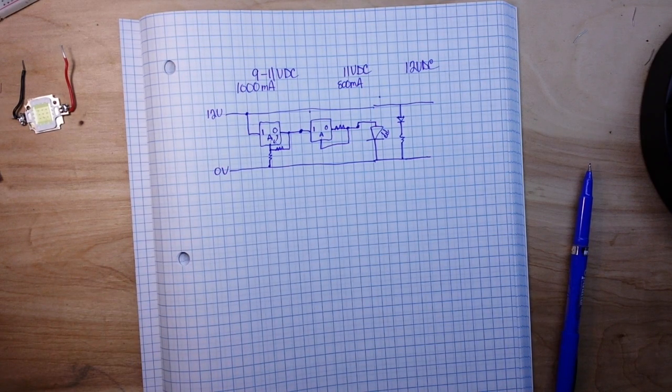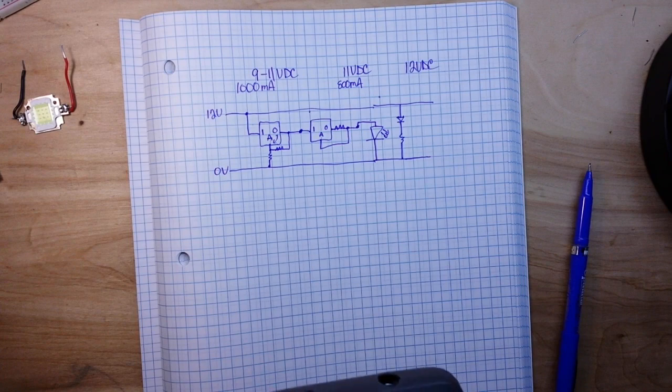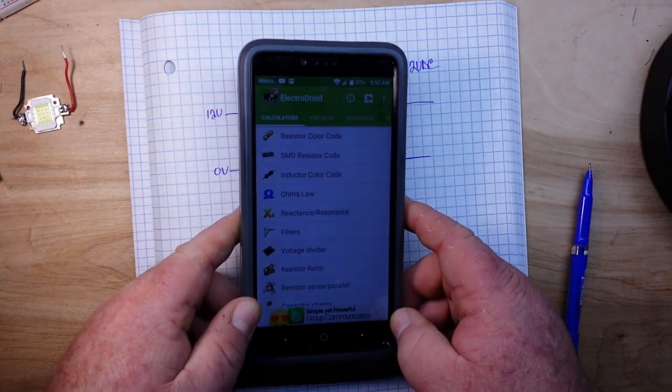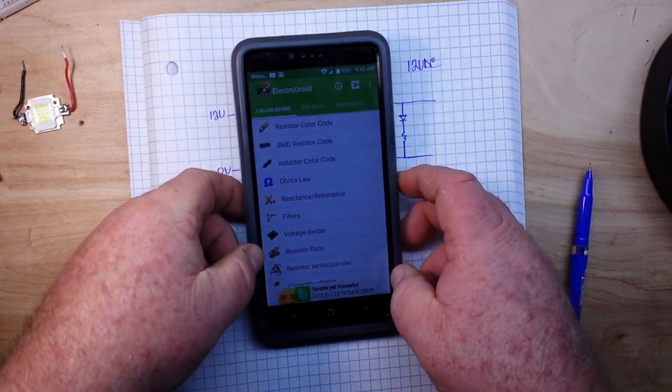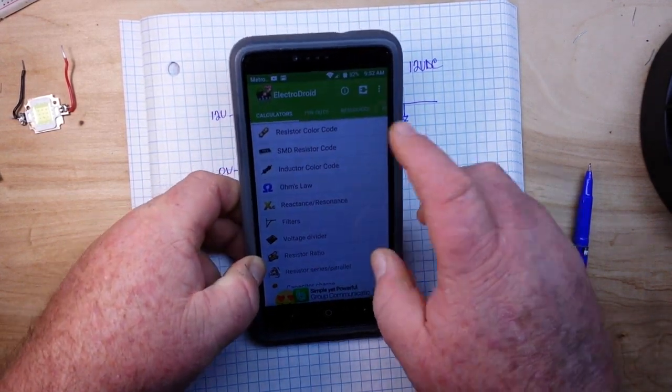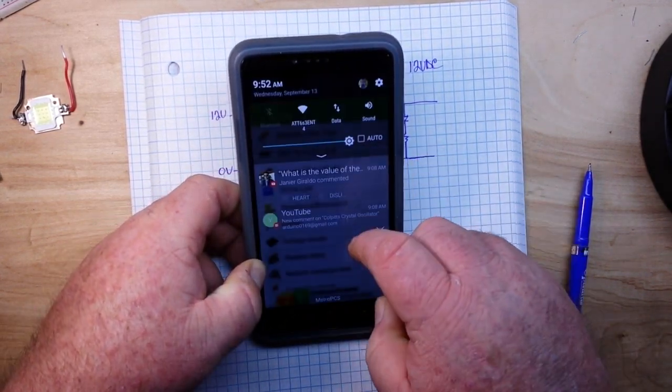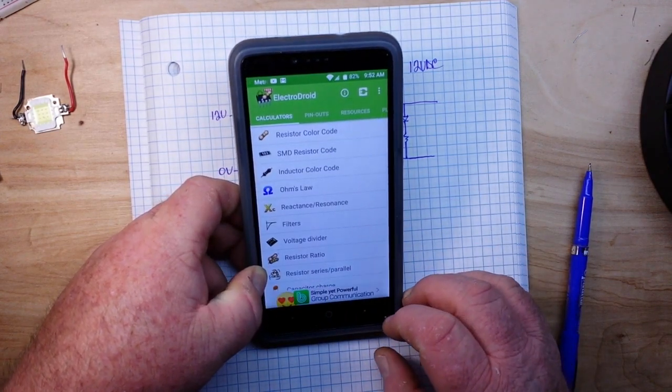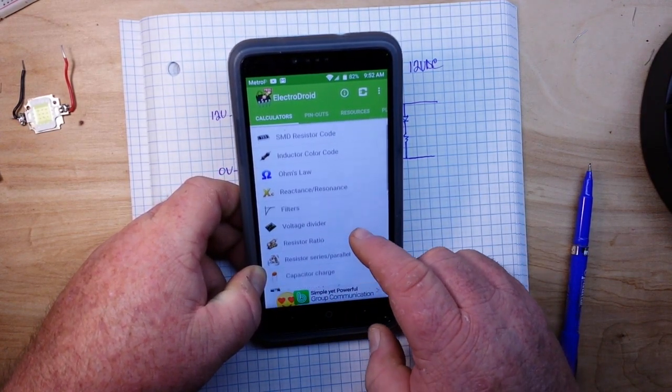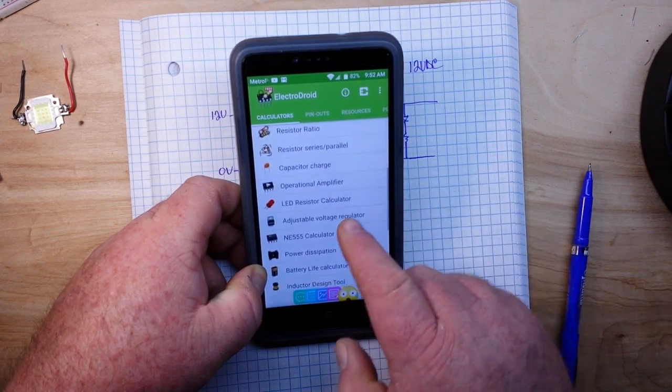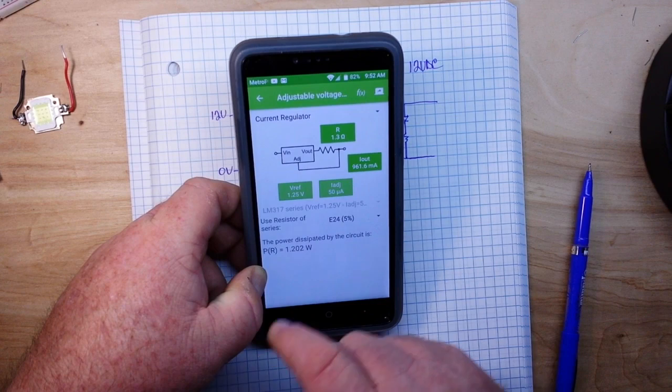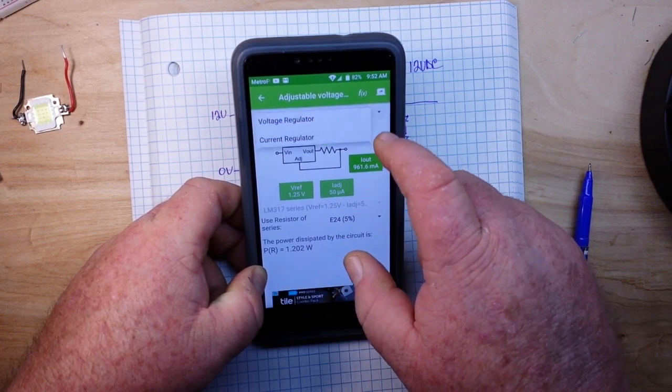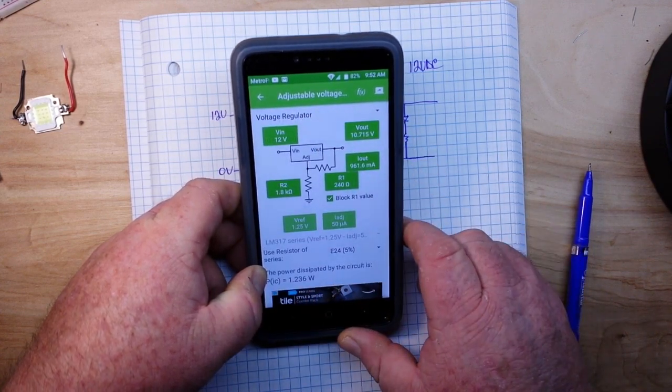And it is an app that I have on my phone called ElectroDroid. So we're just going to come down here to adjustable voltage regulator.